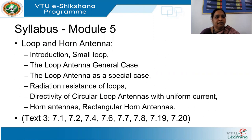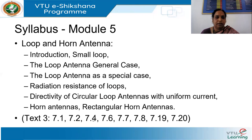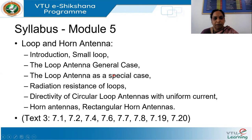The syllabus of Module 5 consists of loop and horn antennas. Under loop antennas we cover the introduction, the small loop antenna, the loop antenna general case, radiation resistance of loops, and directivity. Next comes horn antennas and rectangular horn antennas.